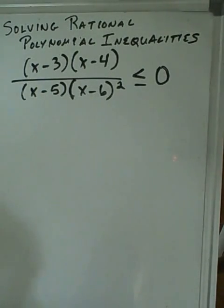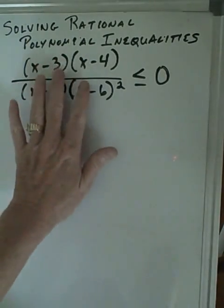Alright, the easiest way to solve rational polynomial inequalities is using what's called a sign chart. And in order to use a sign chart, we have to have critical values.